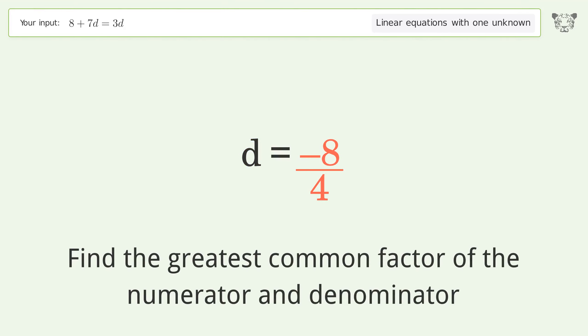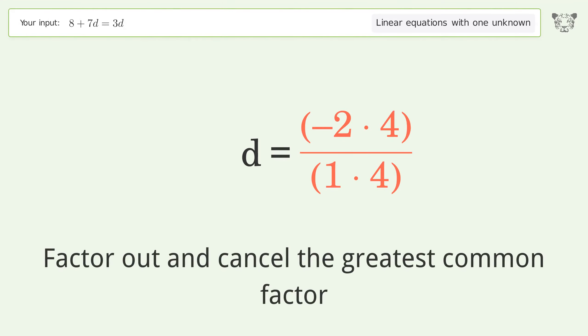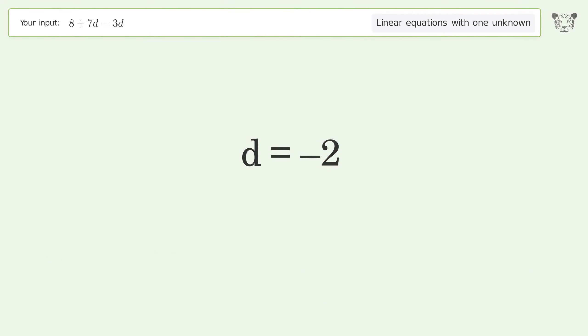Find the greatest common factor of the numerator and denominator. Factor out and cancel the greatest common factor. And so the final result is d equals negative 2.